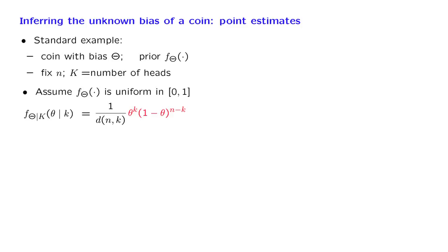We will now continue with the problem of inferring the unknown bias of a certain coin, for which we have a certain prior distribution, and of which we observe the number of heads in n independent coin tosses. We have already seen that if we assume a uniform prior, the posterior takes this particular form, which comes from the family of beta distributions.